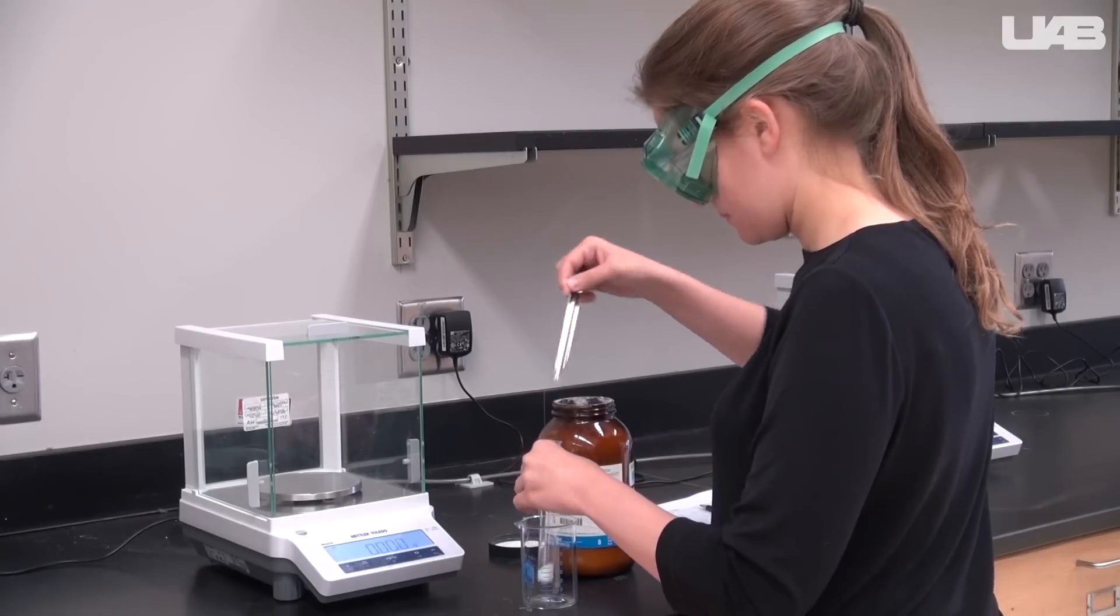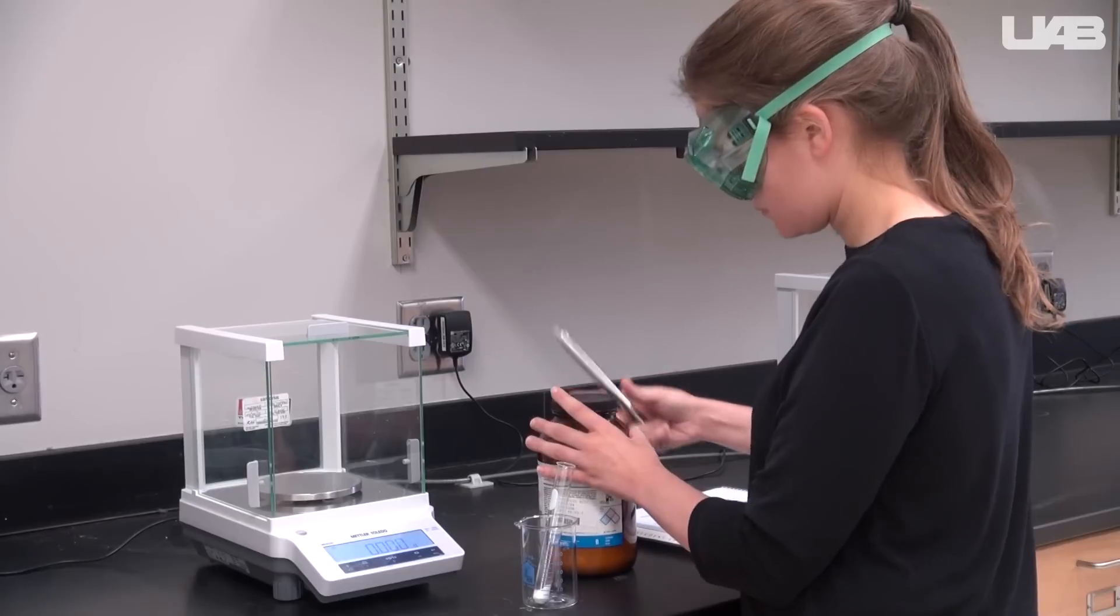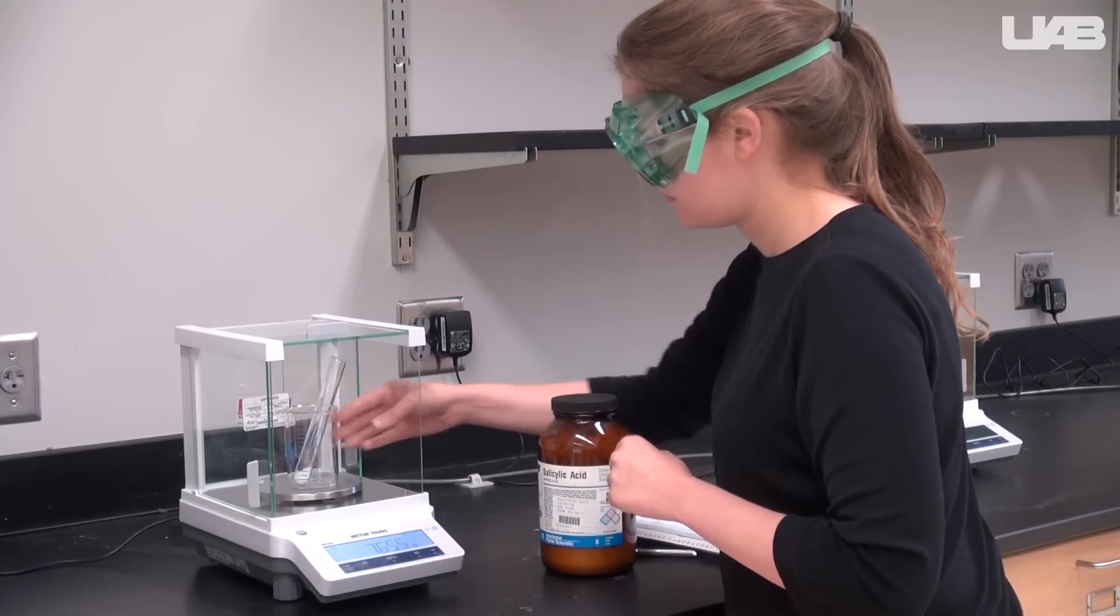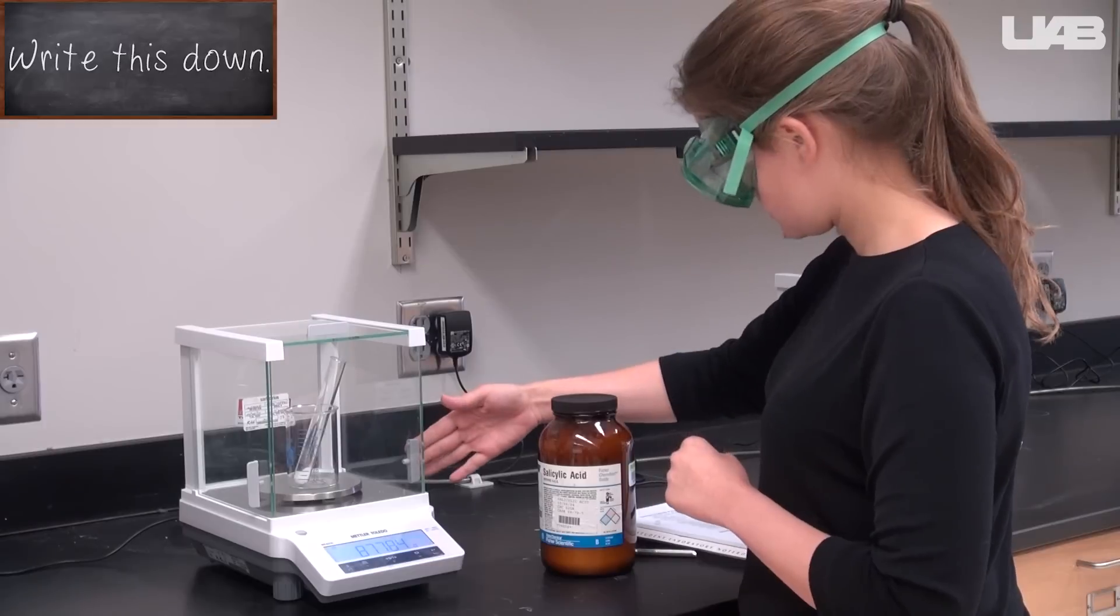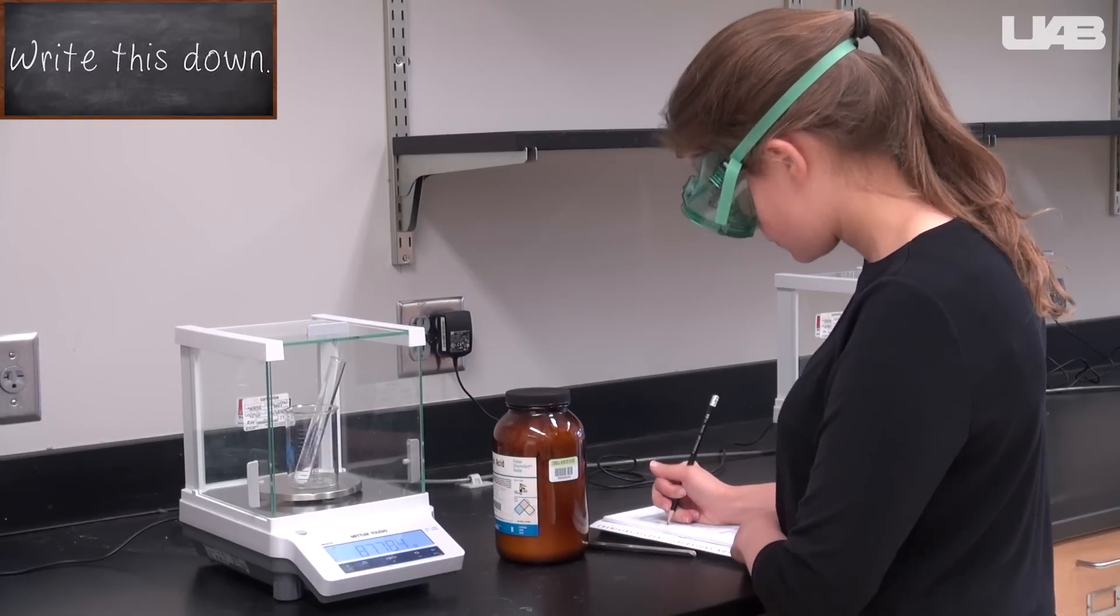The first thing you should do is weigh out about a gram of salicylic acid. You can place the test tube in a beaker to hold it upright, just to make sure that you account for the extra mass. It's okay if it's not exactly a gram. Record the mass in your notebook.